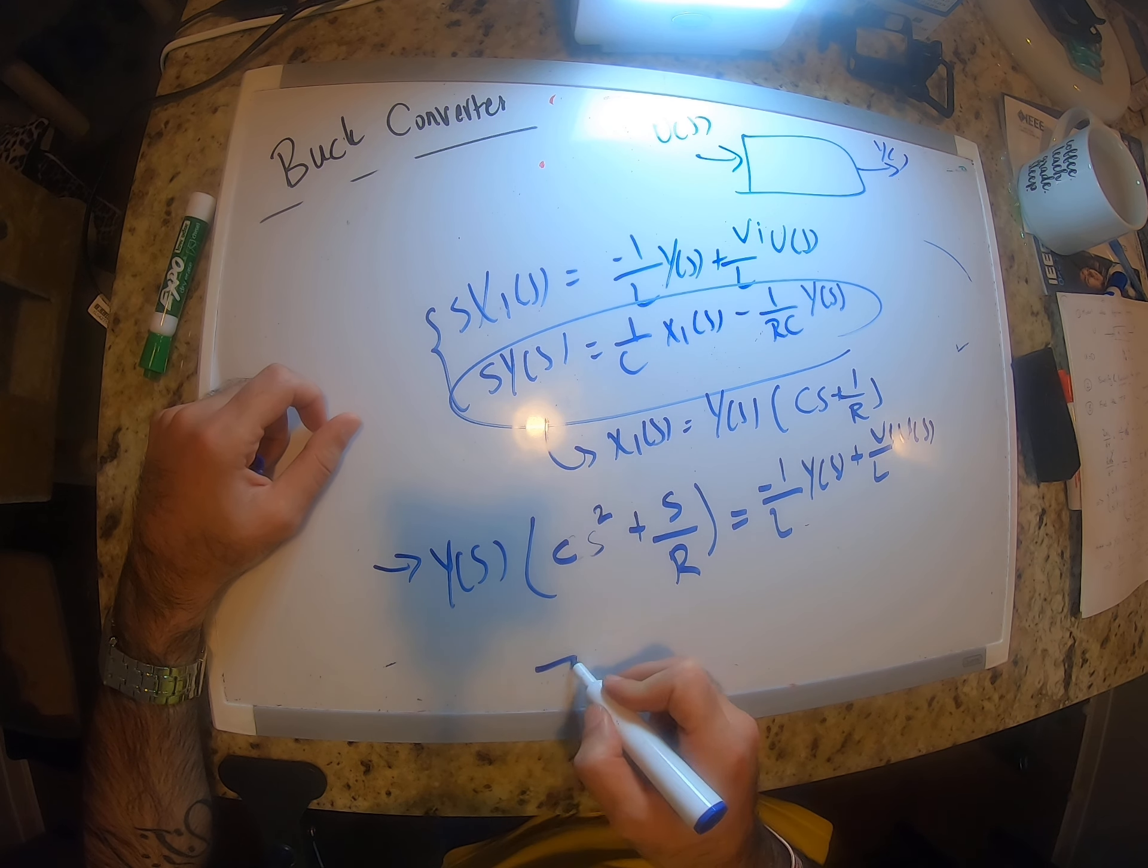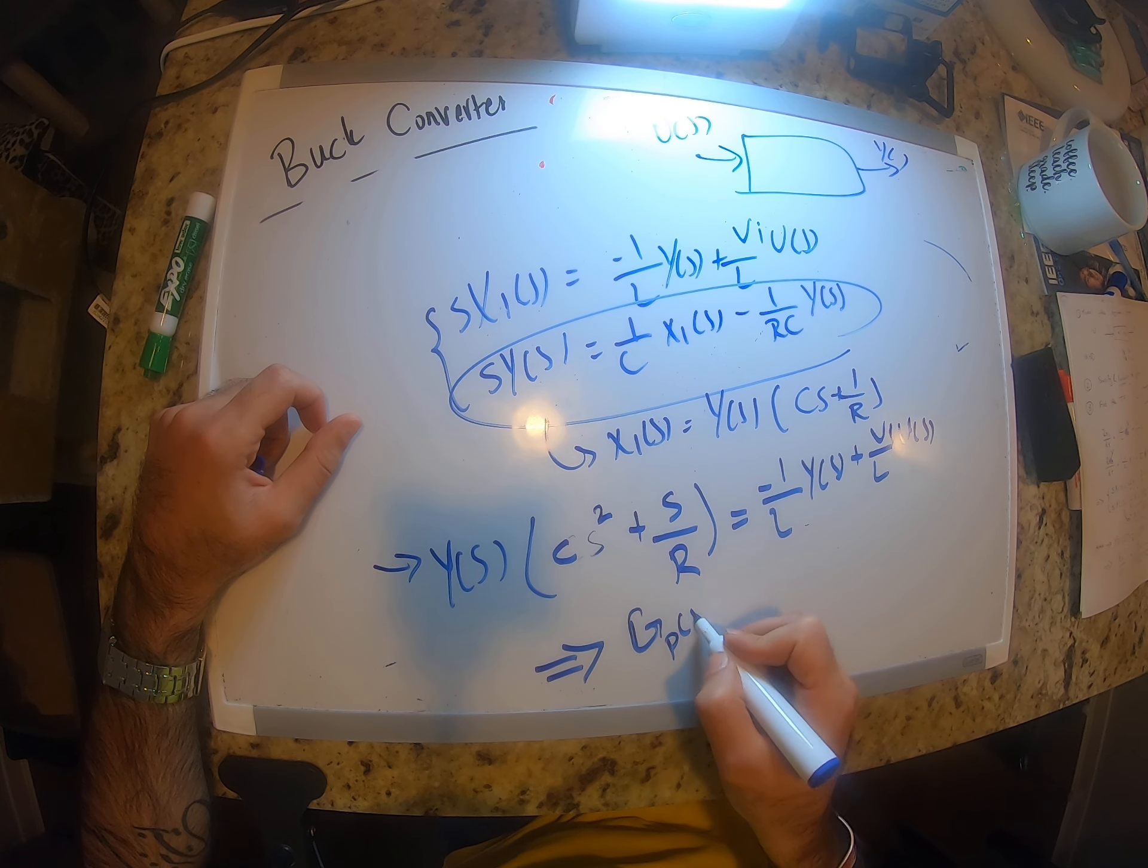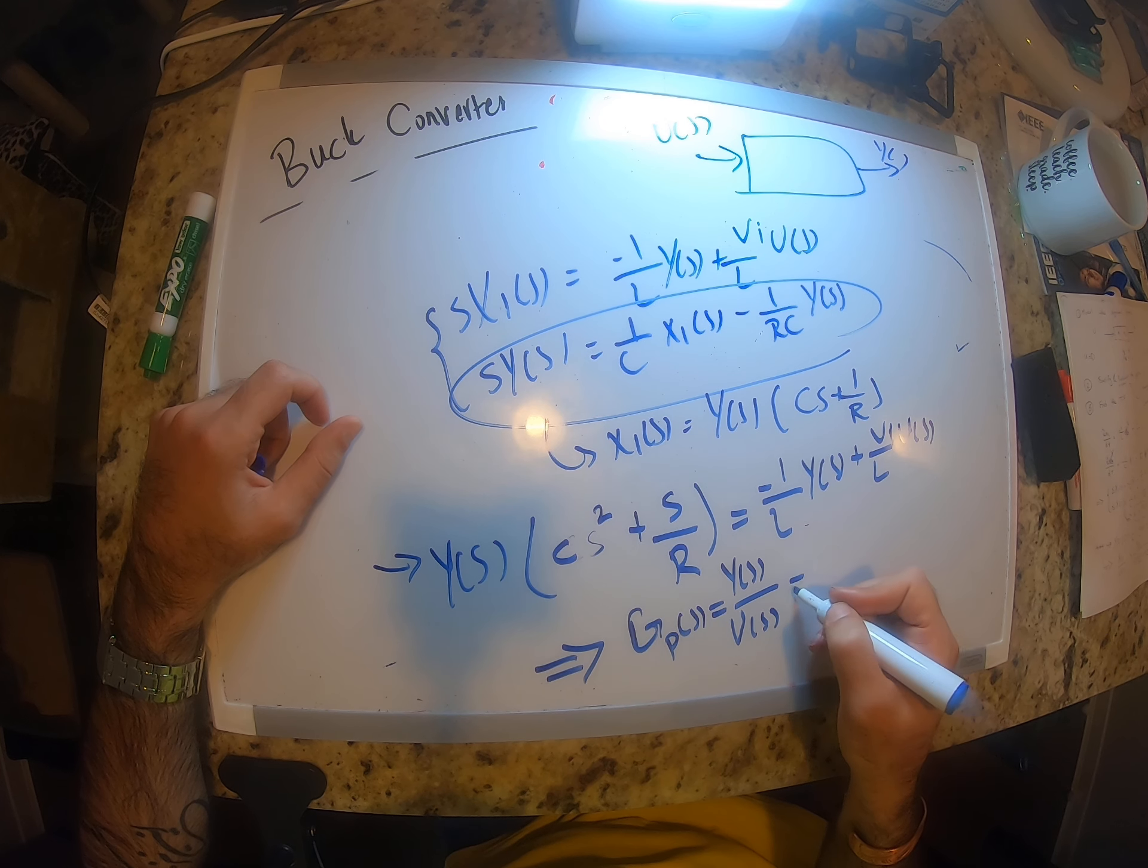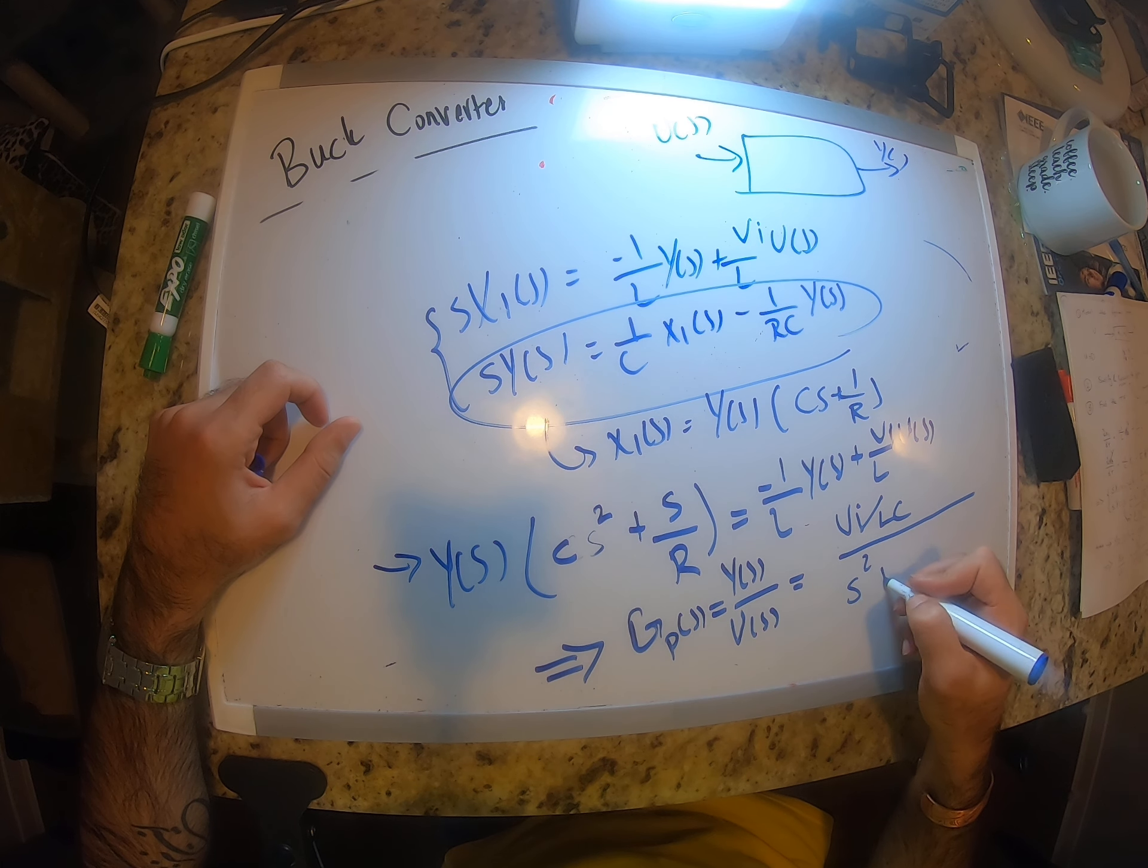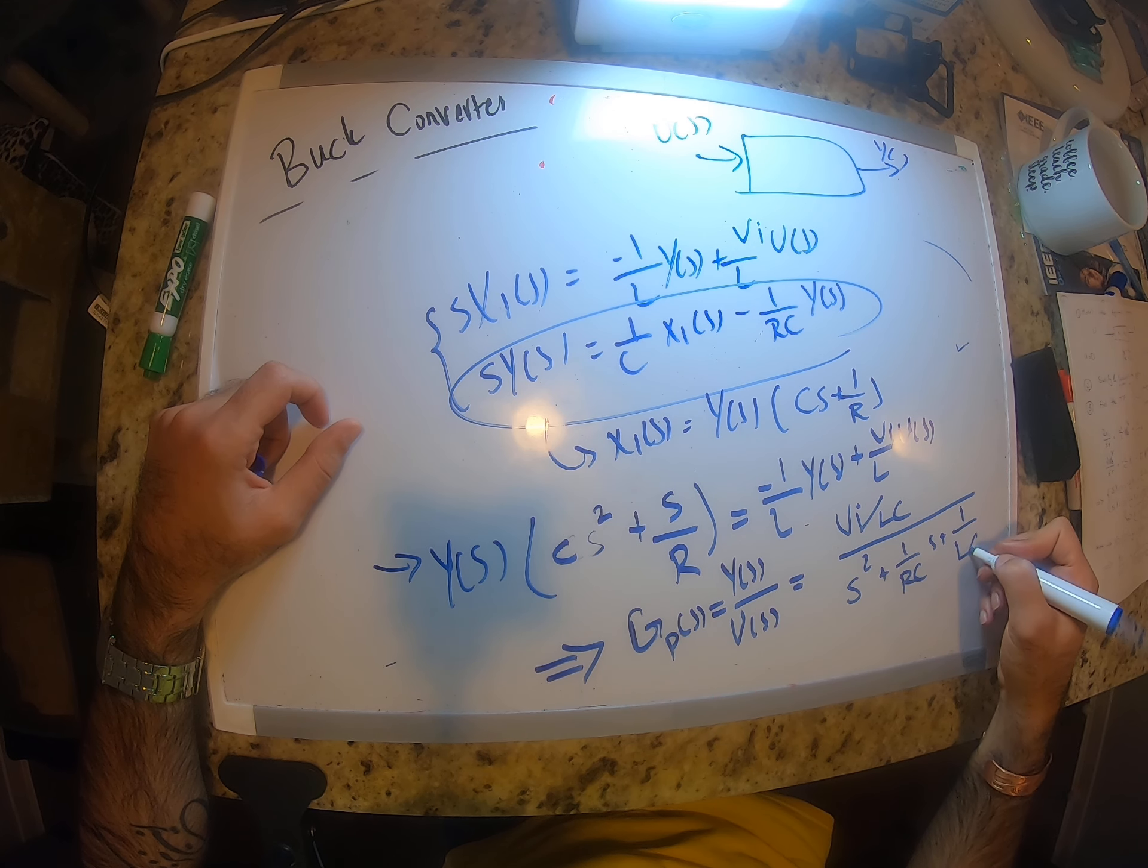And finally the transfer function Gp(s), which equals y(s) divided by u(s), is going to equal Vi over LC divided by s squared plus 1 over RC times s plus 1 over LC.